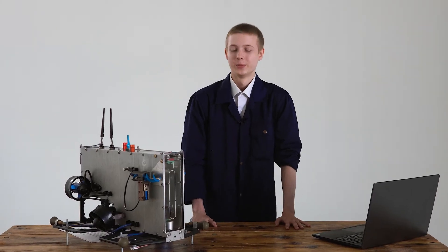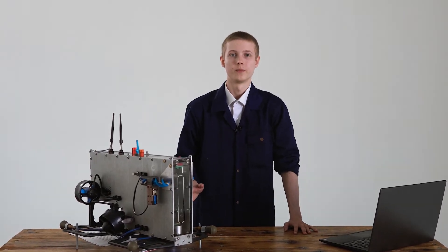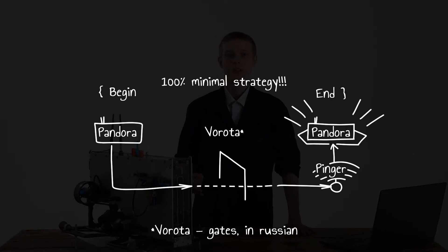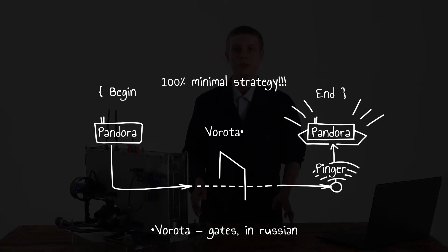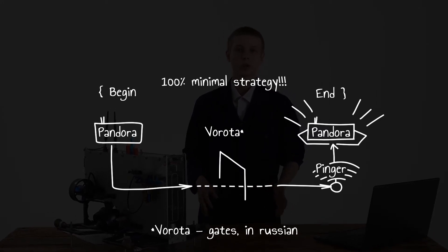Due to its small size and excellent stability, Pandora can fulfill our minimum plan by 100%. This plan consists of completing the task called Vorota Pinger. Pandora can pass through the Vorota without using machine vision due to its straight-line shape.